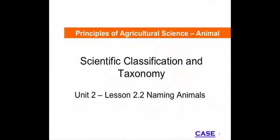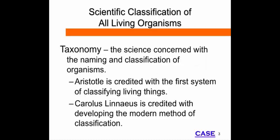Scientific Classification and Taxonomy, Lesson 2.2: Naming Animals. You've just completed Activity 2.2.1 Tasty Taxonomy, where you classified objects based on their physical characteristics and applied a hierarchical organizational system to a food group. Animals are classified several different ways, such as binomial nomenclature, purpose, and characteristics of anatomy and physiology.